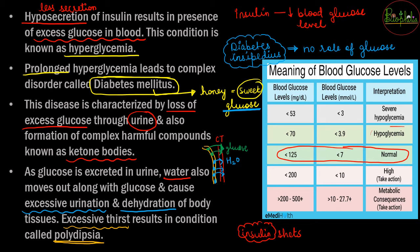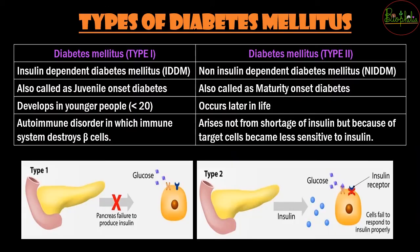If blood glucose levels are low it is called hypoglycemia, whereas if blood glucose levels are more it is called hyperglycemia, which can lead to diabetes mellitus. These results can be calculated with a blood glucose measuring device. People with diabetes regularly check their glucose level readings.